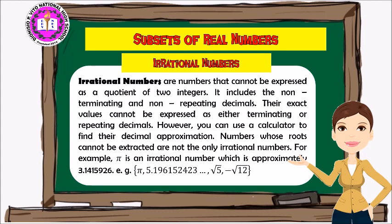Another subset is irrational numbers. These are numbers that cannot be expressed as a quotient of two integers. They include non-terminating and non-repeating decimals whose exact values cannot be expressed as terminating or repeating decimals. You can use a calculator to find their decimal approximation. Numbers whose roots cannot be extracted are not the only irrational numbers. For example, pi is an irrational number approximately equal to 3.1415926. Other examples include pi point 1961 5243 and so on, the square root of 5, and negative square root of 12.